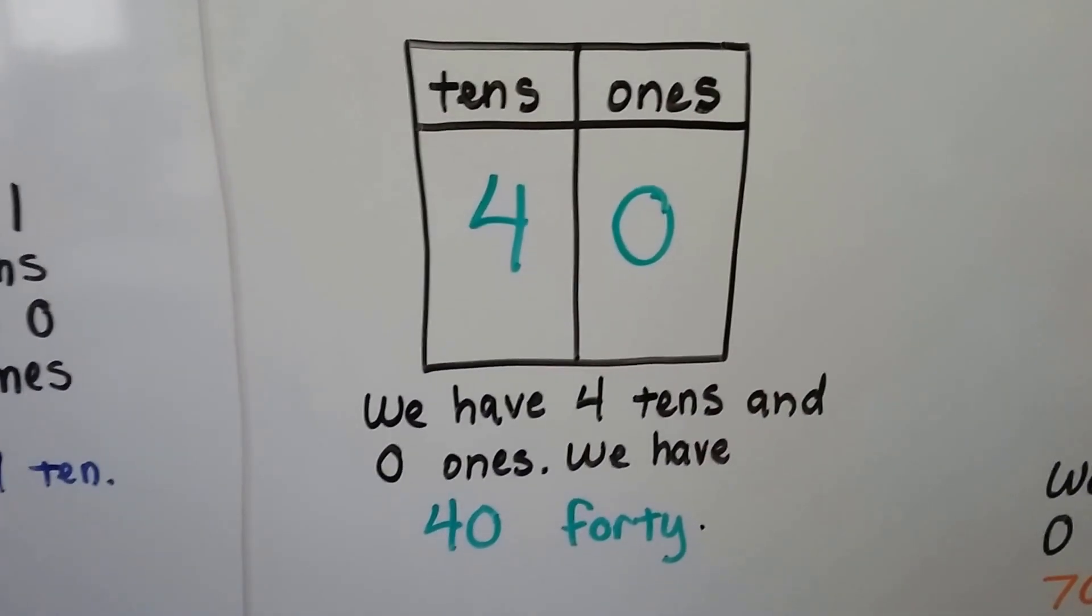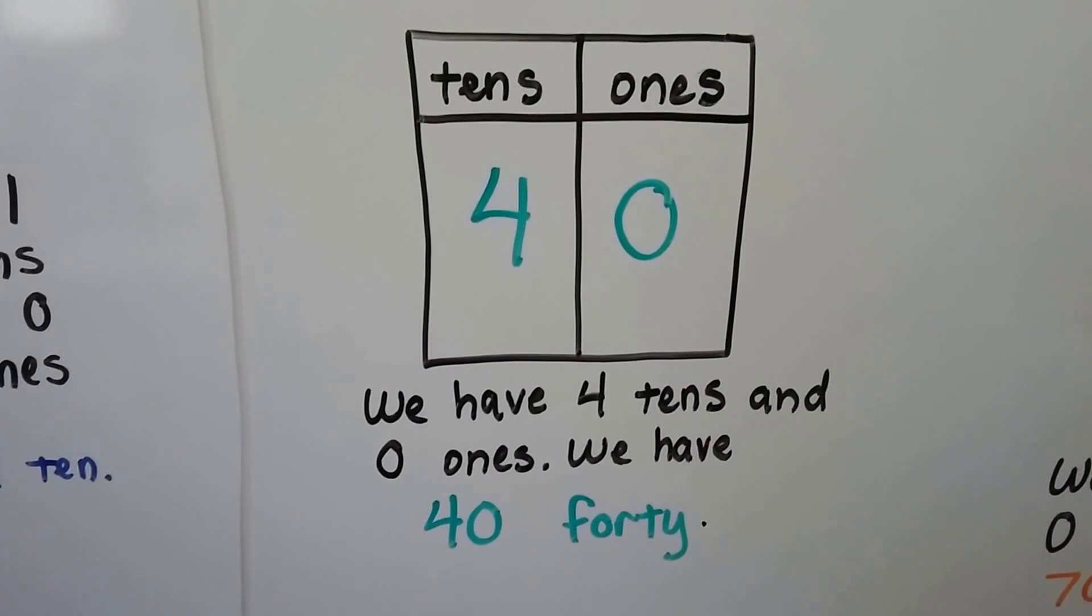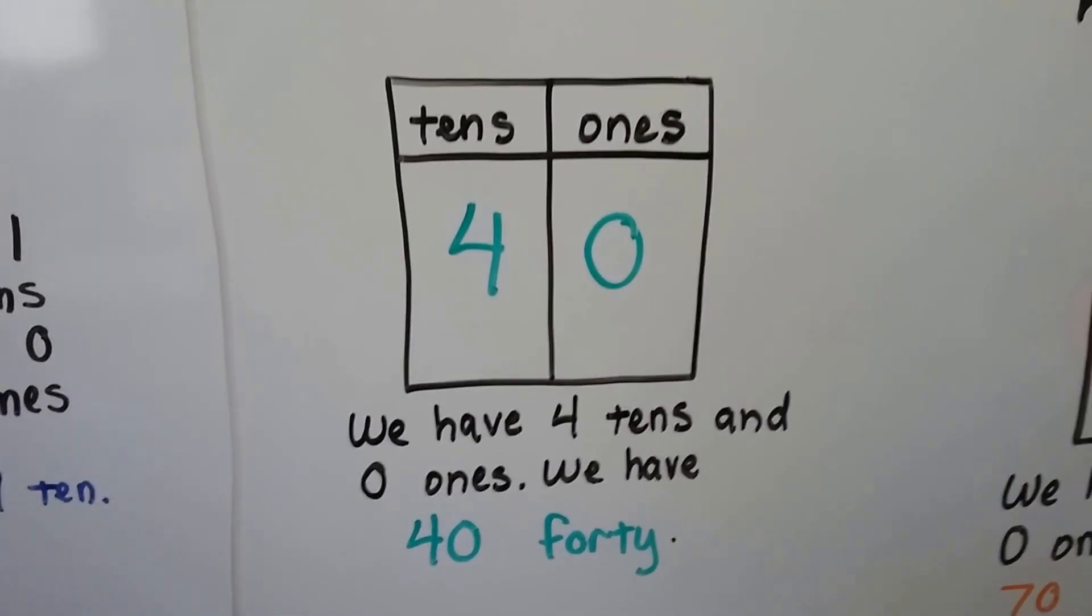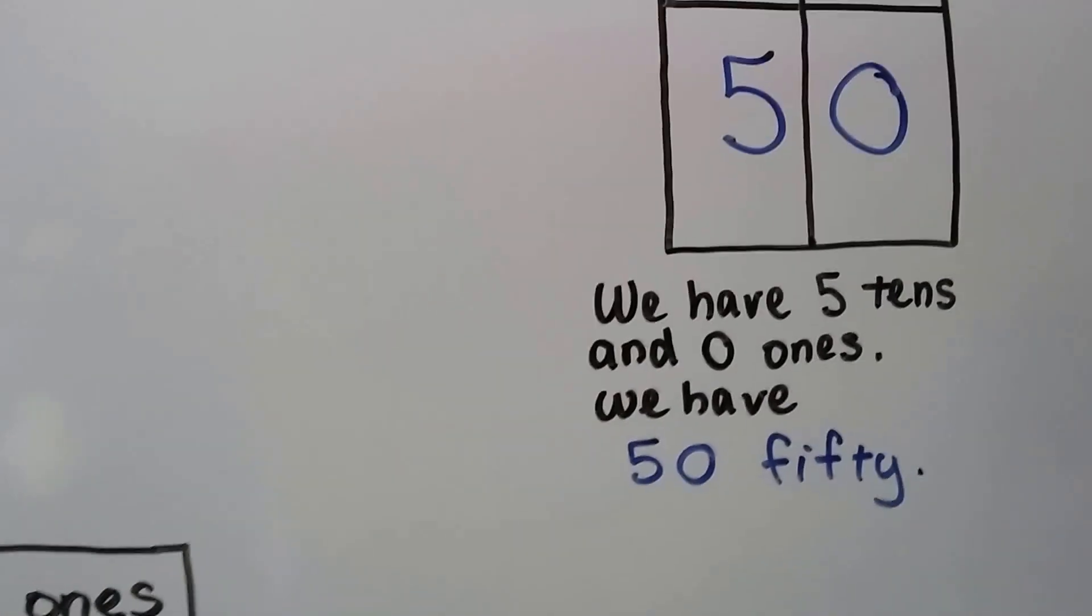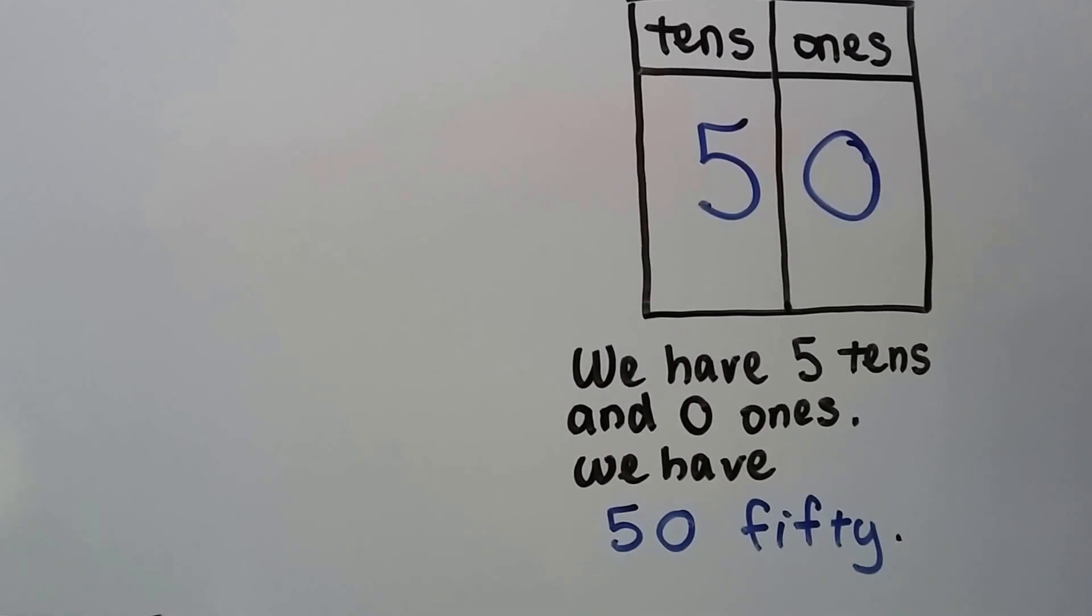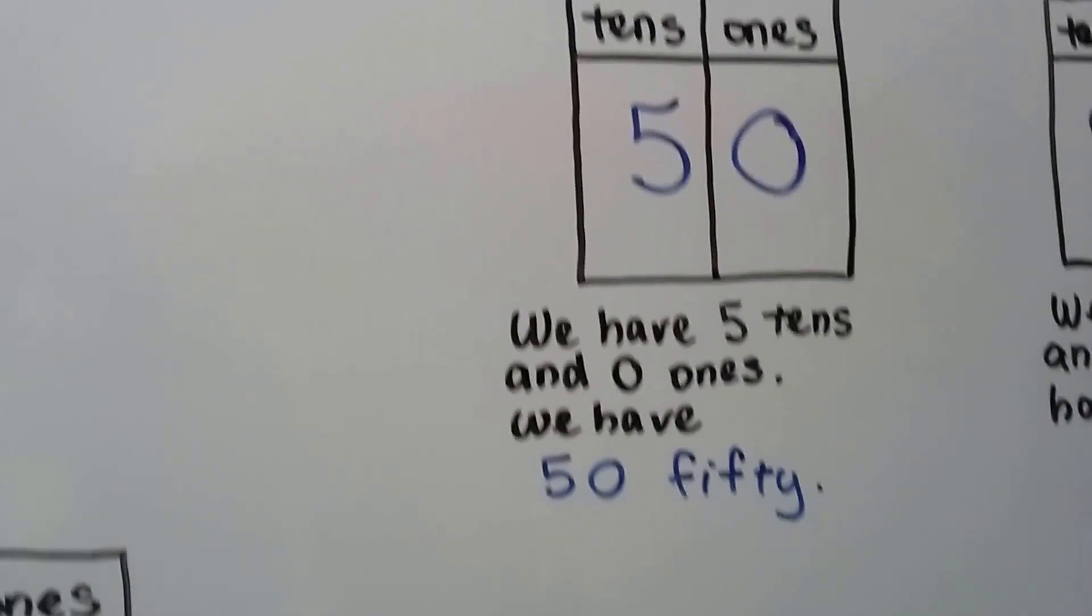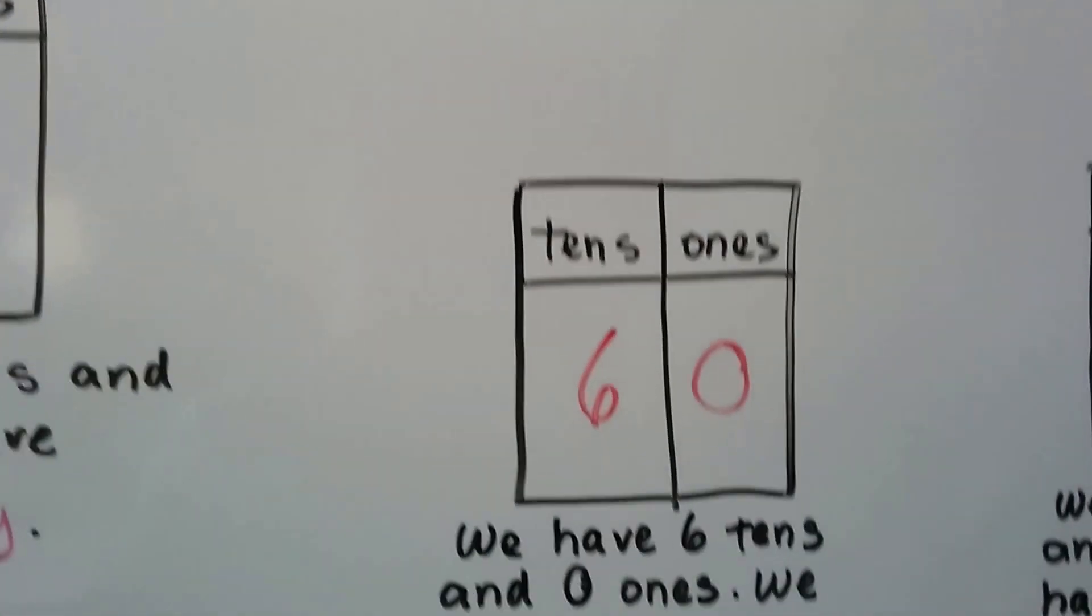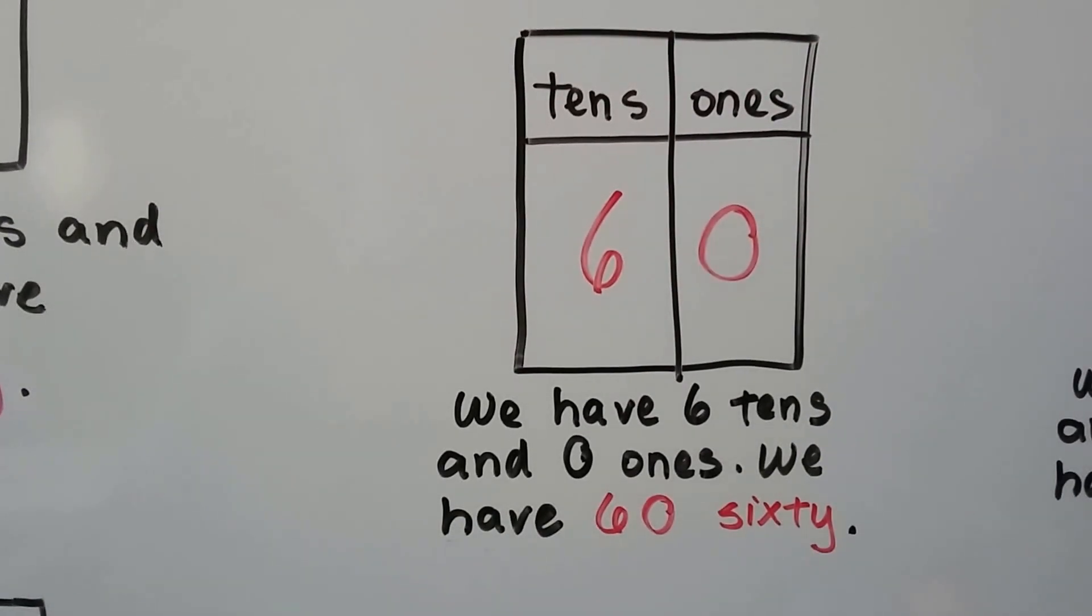We have four tens and zero ones. We have forty. We have five tens and zero ones. We have fifty. We have six tens and zero ones. We have sixty.